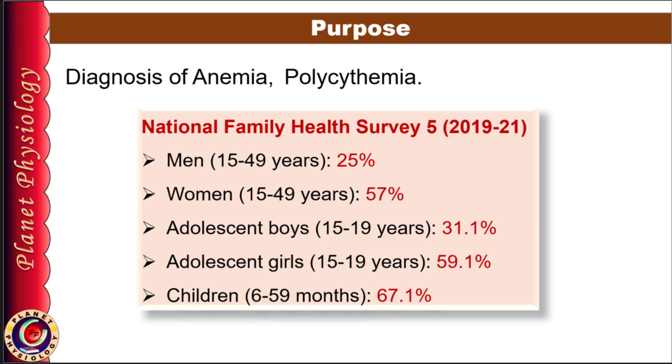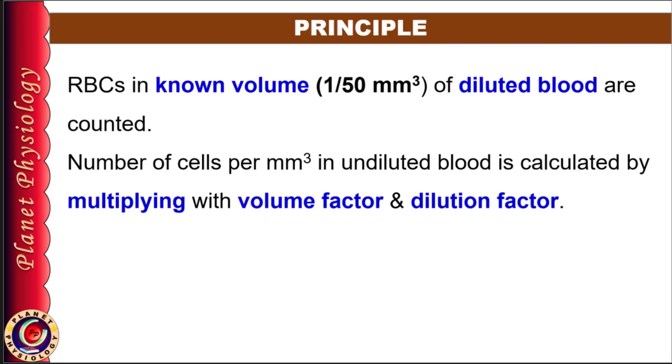As we will be using Hemocytometer to count RBCs, first let's see its principle. The process involves two main steps. First, RBCs are counted in known volume of diluted blood, typically 1/50 cubic millimeter, and then we calculate RBC count per cubic millimeter of undiluted blood by multiplying with appropriate volume factor and dilution factor.